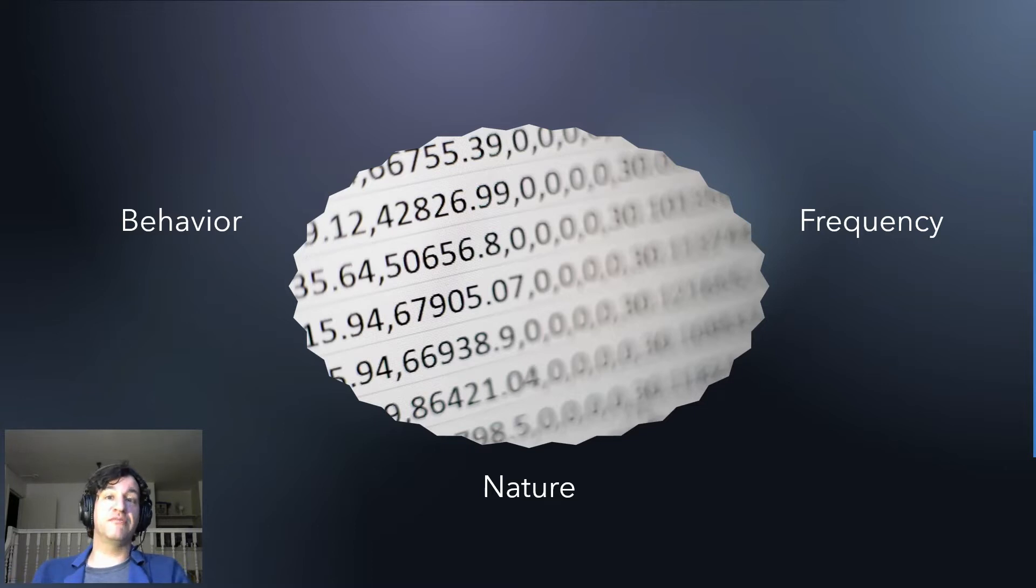So whenever you use data you need to understand the behavior of this data. We'll talk about that. You need to understand the frequency, how often something happens in the data, and you need to understand the nature. For example, if it's discrete or continuous. On this video we'll only talk about continuous and we'll ignore discrete distributions, for example Poisson.